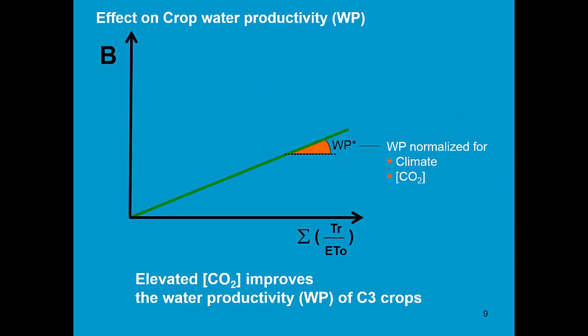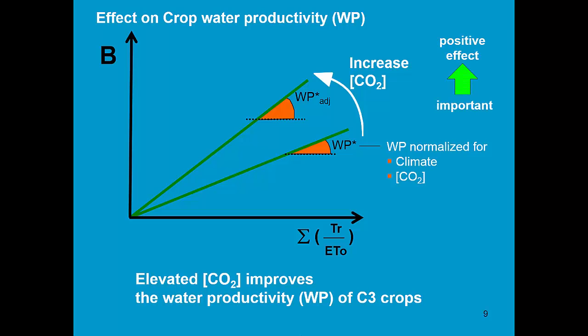Higher CO2 concentration strongly increases the biomass water productivity. So the effect of elevated CO2 on biomass water productivity is very important.